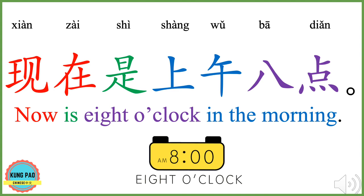现在是上午八点。 现在 means now. 上午 means morning. 八点 means eight o'clock. 现在是上午八点 means now is eight o'clock in the morning. Now your turn.